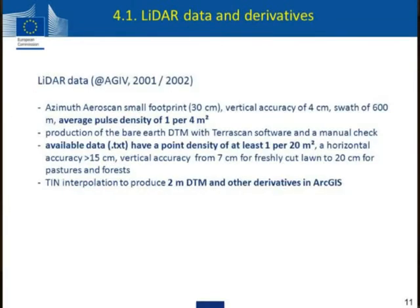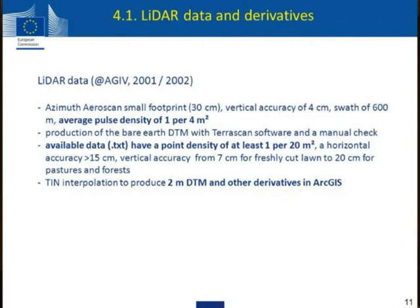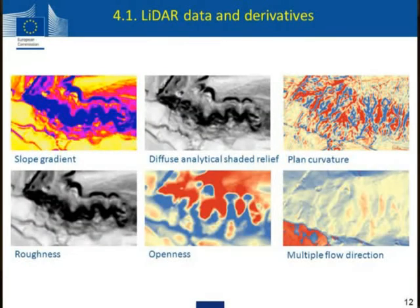The LiDAR data we had were much poorer than what was just presented. We started with an average pulse rate of only one point per four square meters — very low resolution data. After pre-processing, we ended up with only one point per 20 square meters, which is really very low when you're looking for small terrain changes. Vertical accuracy was quite good, however, ranging from about seven centimeters to 20 centimeters depending on land cover. We then created a two-meter DTM and various derivatives in ArcGIS: slope gradient, relief, plan curvature, roughness, openness, flow direction, et cetera.